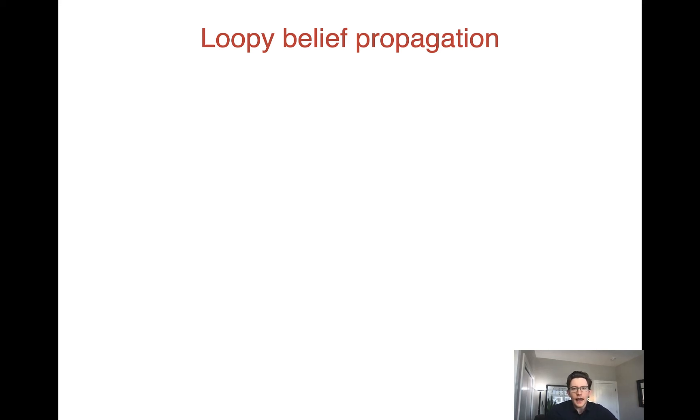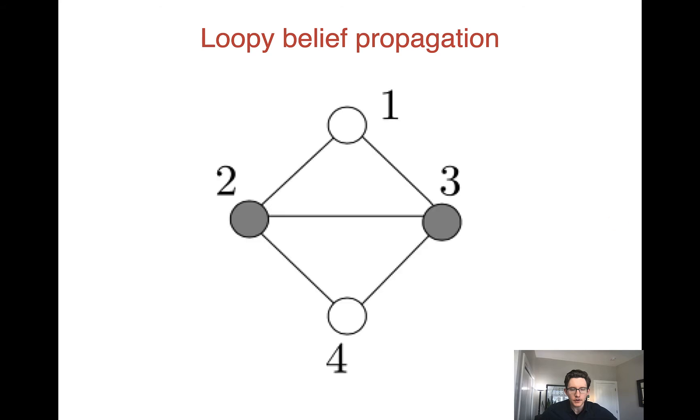Next we're going to talk about our first method for approximate inference, and this is called loopy belief propagation. So what we do in loopy belief propagation is, we defined belief propagation and said it only works on Markov random fields in the form of a tree. Now of course that's a big limitation because lots of Markov random fields aren't in the form of a tree.